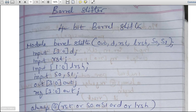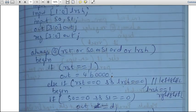This is the declaration. Input D is 4 bits. RST is 1 bit. LRSH is 2 bits. Input S0 and S1 are single bits. Output is the shifted result.